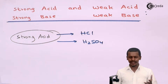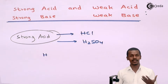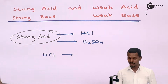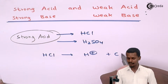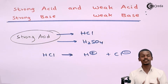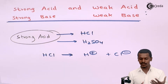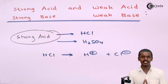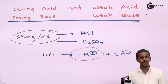Let me give an example of how they dissociate. If we take HCl, when it dissociates completely it forms H+ and Cl−. This arrow indicates that once HCl is dissolved in water it dissociates completely into H+ and Cl−. The reason it is called an acid is because of the H+ ions present in HCl.